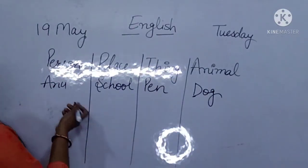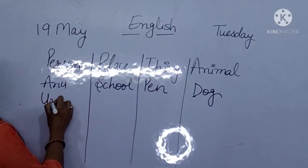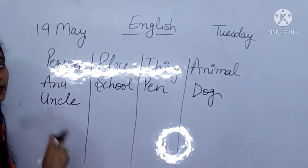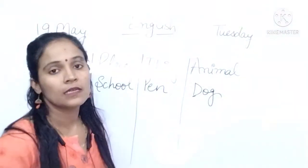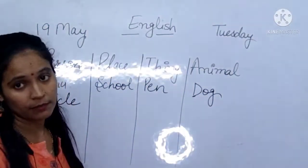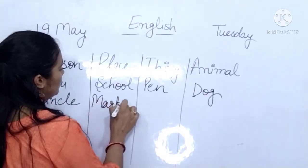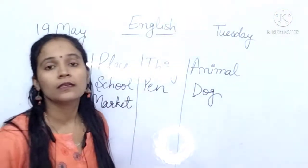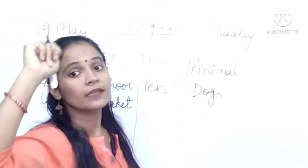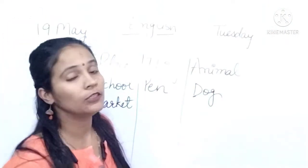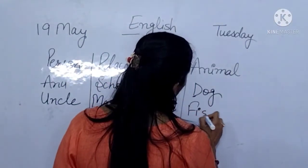Now another example: person — uncle. Now next is place — market. Market is also a place. Thing — this fan is also a thing, and also door and pencil. We are writing here pencil. And animal — I am writing here fish.